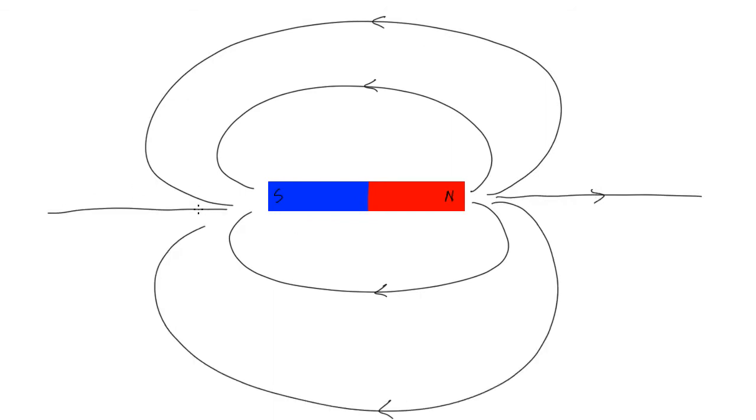The magnetic field lines always come out from the north pole of the magnet and point towards the south pole of the magnet.